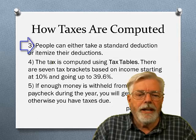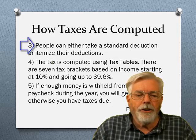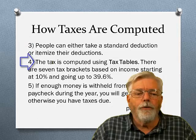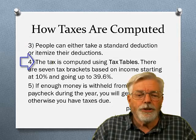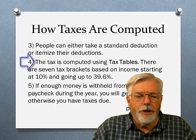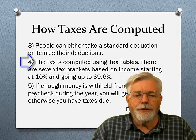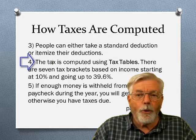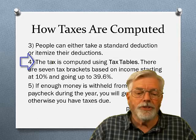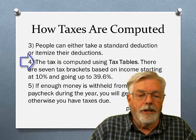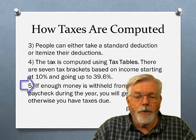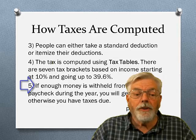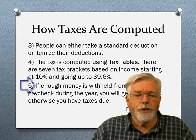This is called taxable income. Step 3: people can either take a standard deduction or itemize their deductions. Step 4: the tax is computed using tax tables — there are seven tax brackets based on income starting at 10% and going all the way up to 39.6%. Step 5: if enough money is withheld from your paycheck during the year, you will get a refund; otherwise, you have taxes due.